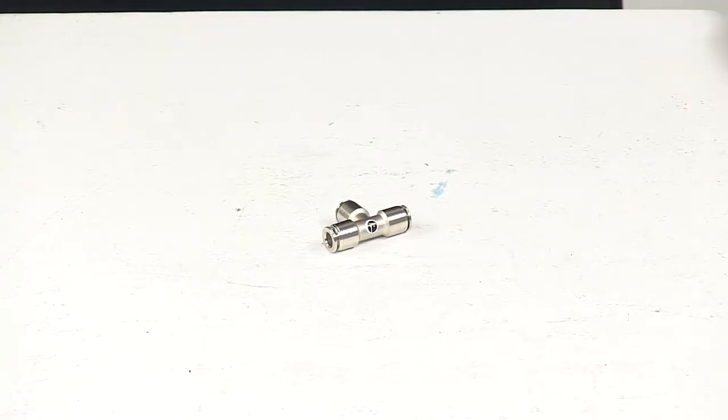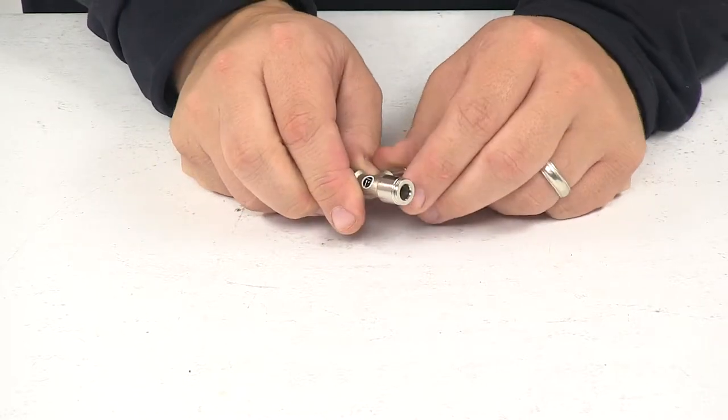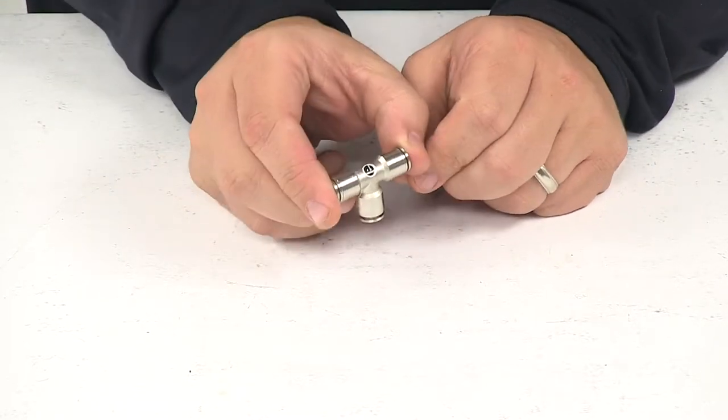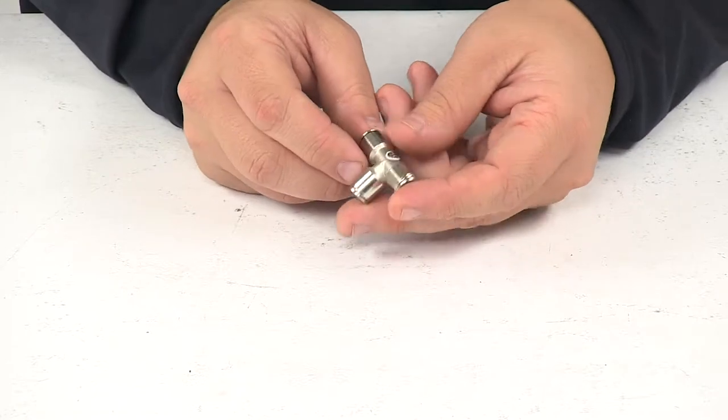Today we're taking a look at the Airlift Union T-Piece for quarter inch air lines. This unit allows you to run two air lines to a combined line.